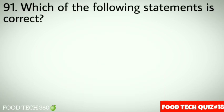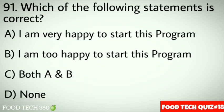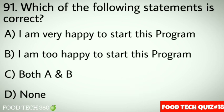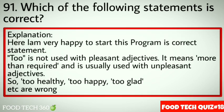Question 91: Which of the following statements is correct? Options: A. I am very happy to start this program. B. I am too happy to start this program. C. Both A and B. D. None. Correct answer: A. I am very happy to start this program. Explanation: 'Too' is not used with pleasant adjectives; it means 'more than required' and is used with unpleasant adjectives. So 'too happy', 'too glad' etc. are incorrect.